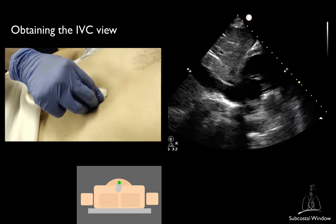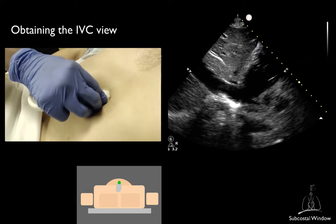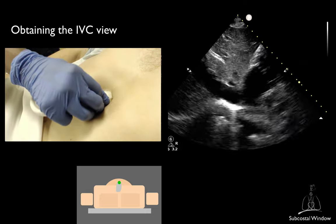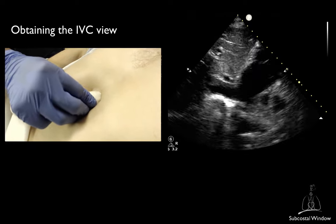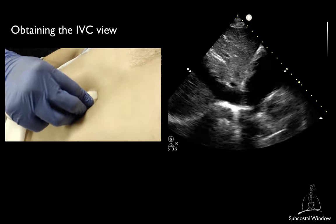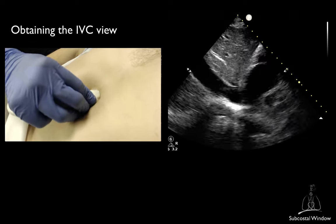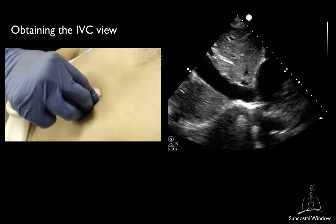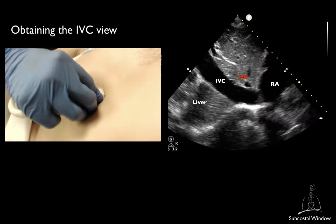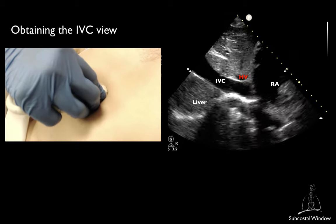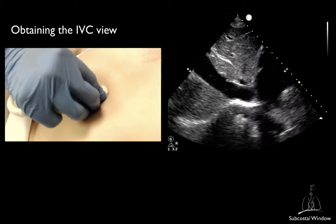You should aim to rotate between 60 and 90 degrees. The marker should be looking towards the patient's head. Fine rotational movement should be applied to make sure that the long axis of the inferior vena cava is imaged. The optimal view of the IVC should allow you to visualize the IVC-RA junction, the liver on both sides, the hepatic vein draining into the IVC, and the IVC should be open as far as possible into the liver.